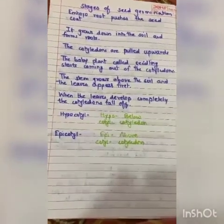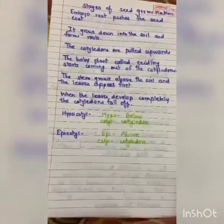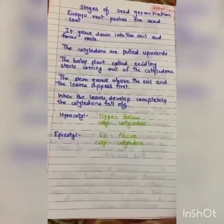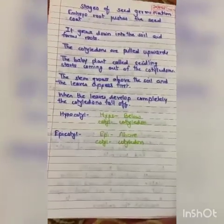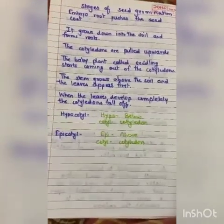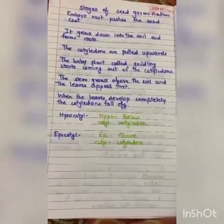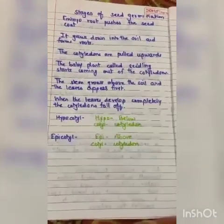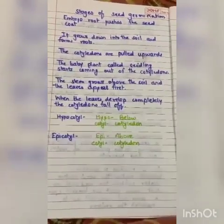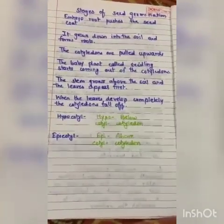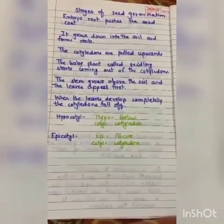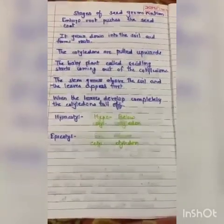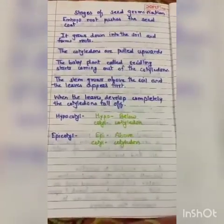We also learned two terms. The first term was hypocotyl — hypo means below, so the part below the cotyledons is called hypocotyl. The second term was epicotyl — epi means above, so the part above the cotyledons is called epicotyl.